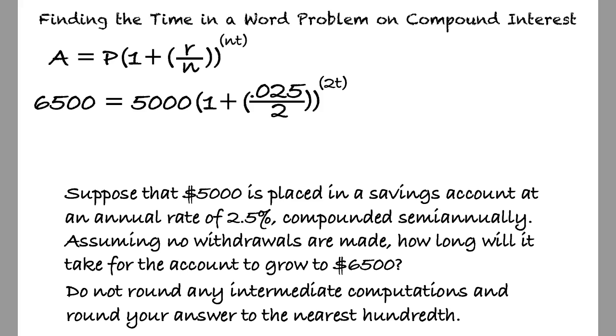Simplifying the parentheses as much as possible yields 1.3 equals 1.0125, all raised to the 2t power. How do we further simplify this equation if the variable t is part of the exponent? Good question.